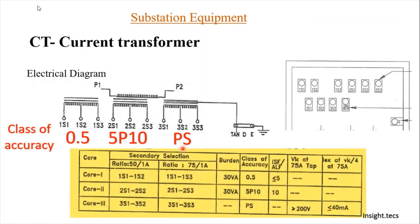Over here we can now see a table for all the 3 cores of the secondary winding, representing its various classes of accuracy.